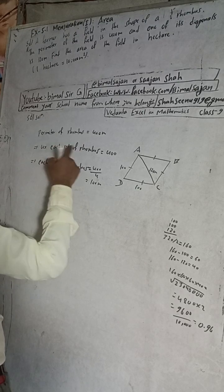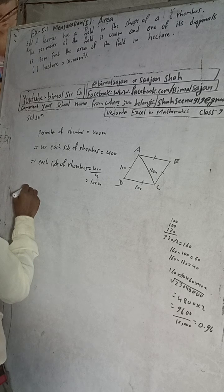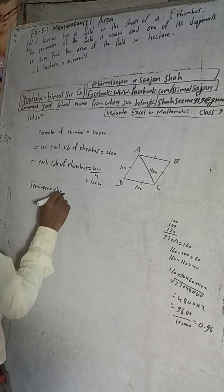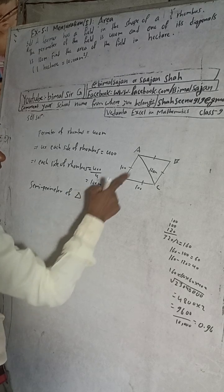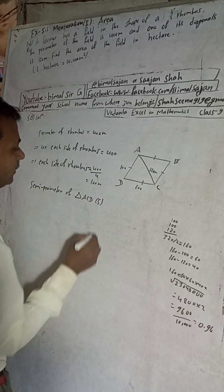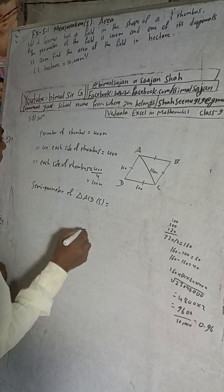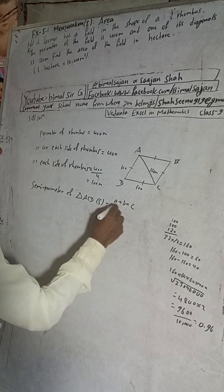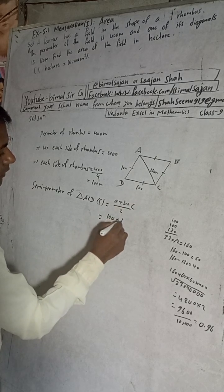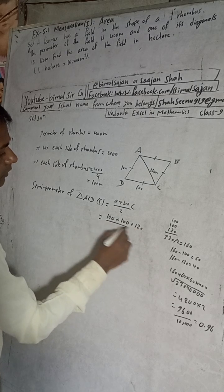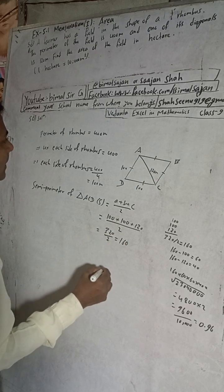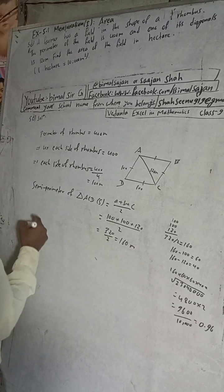Perimeter of rhombus ABCD, now semi-perimeter of triangle ACD. Formula for the semi-perimeter, let it be s, is (a + b + c) / 2. I will suppose this a, this b, and this c. So 100 plus 100 plus 120 divided by 2. When we add this, 320 divided by 2, this will be 160 meters. This is the semi-perimeter. Now area: